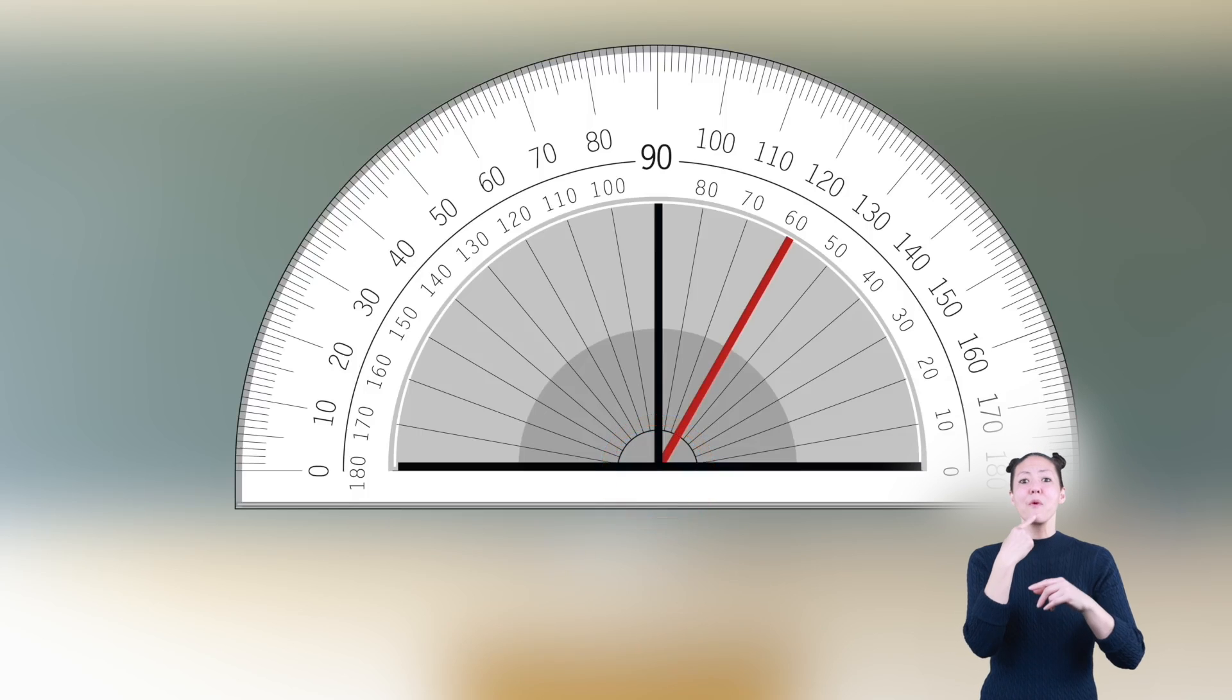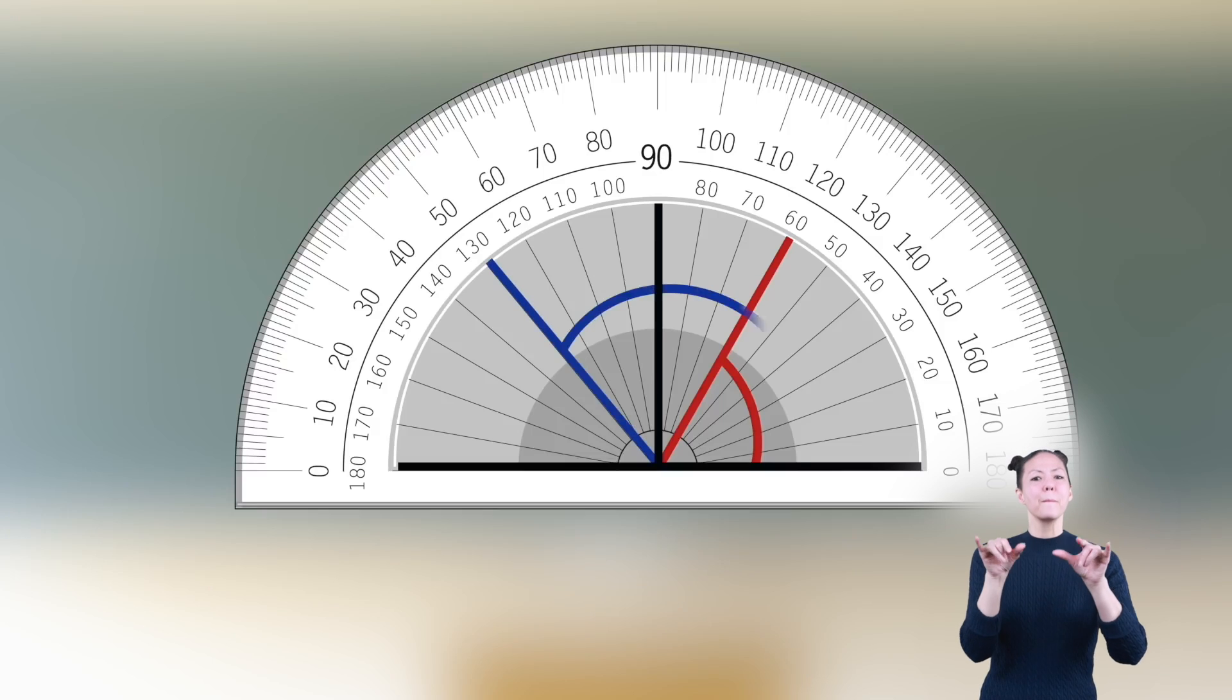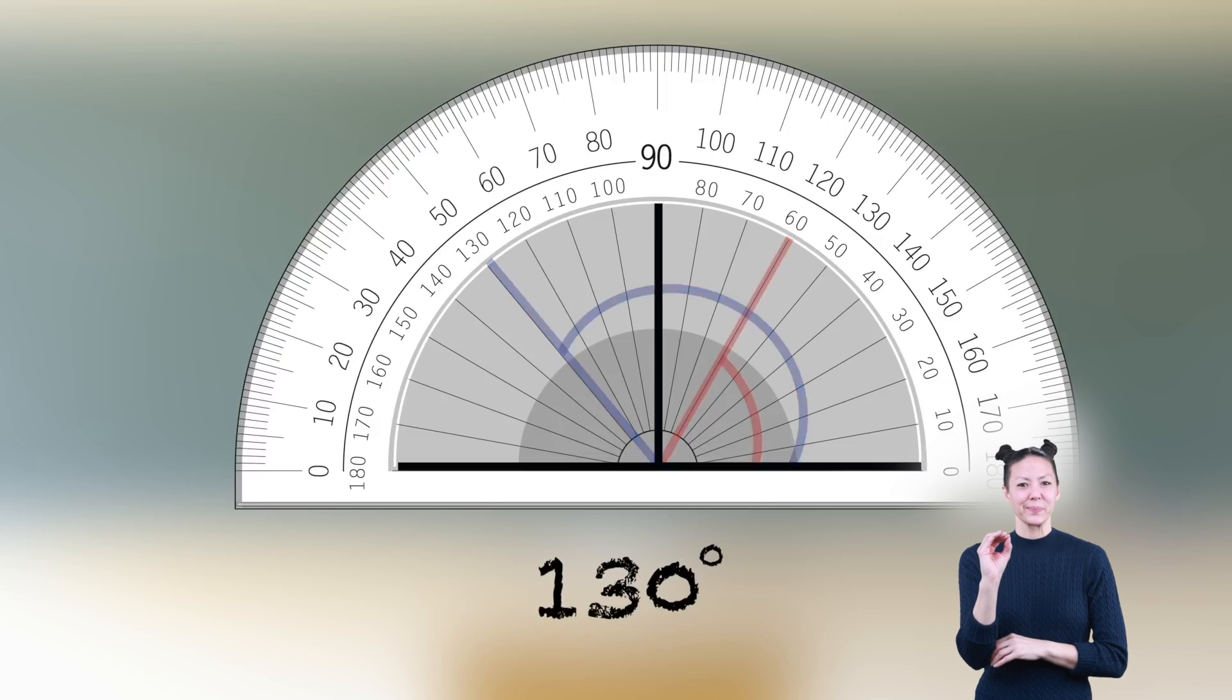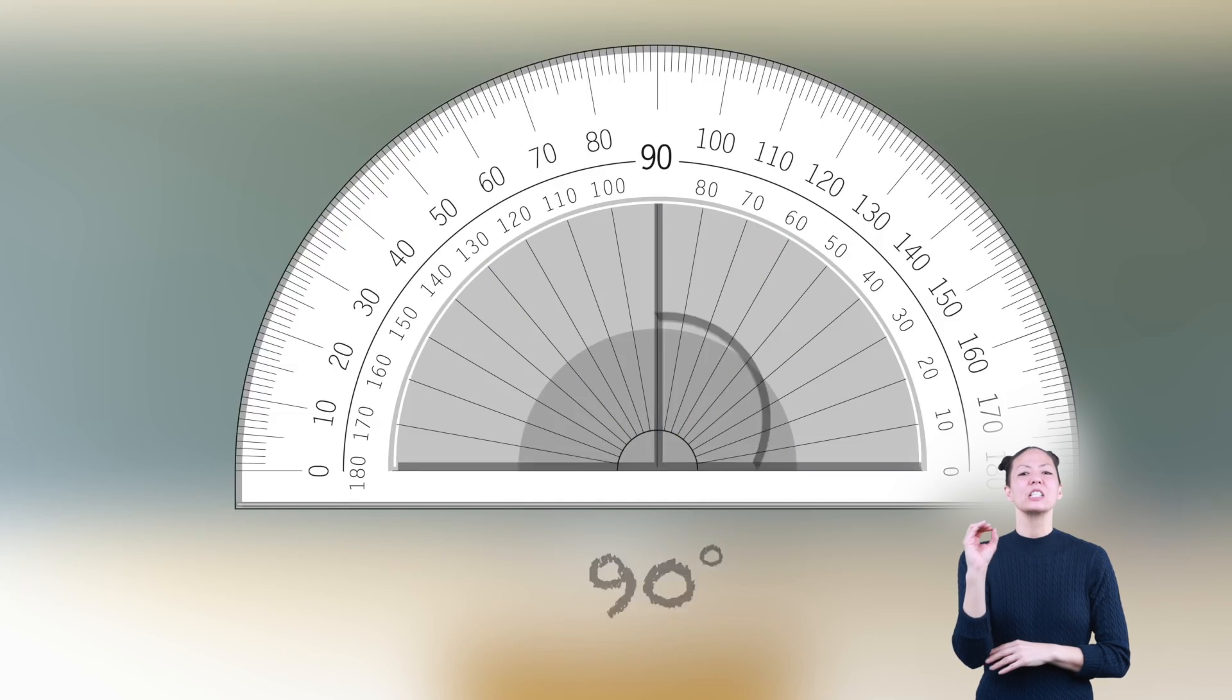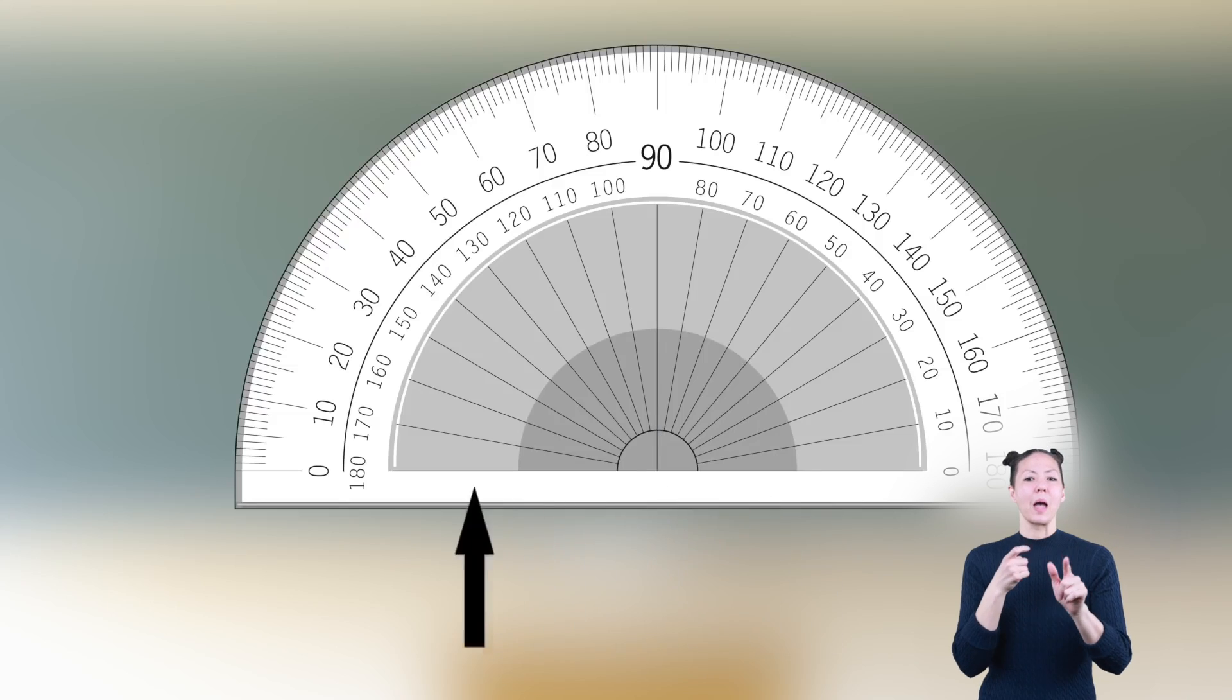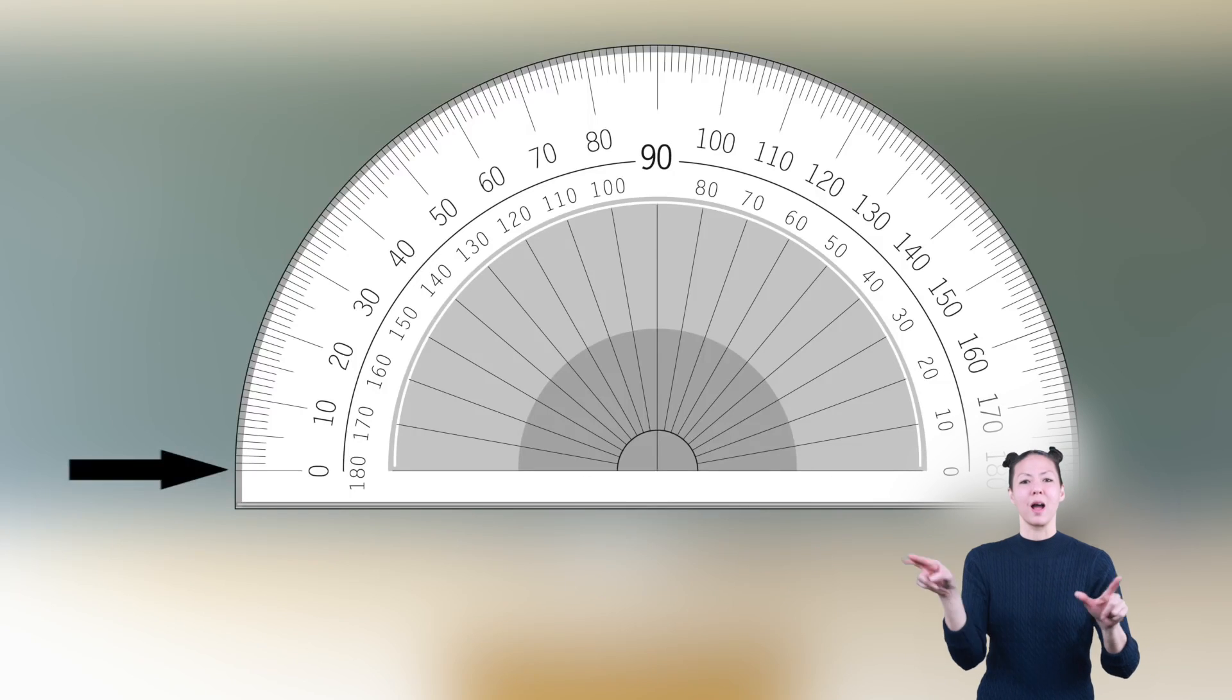The red angle measures 60 degrees. The blue angle measures 130 degrees. The black line angle measures 90 degrees. If measuring right to left, use the bottom row of numbers. If measuring left to right, use the top row.